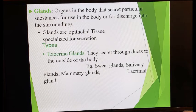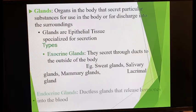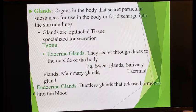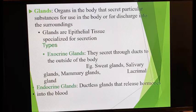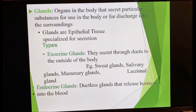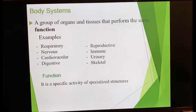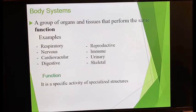Glands are actually organs and they are epithelial tissues. There are two types of glands: exocrine glands and endocrine glands. Exocrine glands have ducts and secrete their contents outside of the body — examples are sweat glands, salivary glands, and mammary glands. Endocrine glands don't have ducts; instead they release their contents, mostly hormones, into the blood.